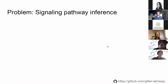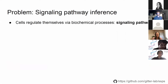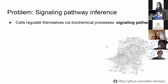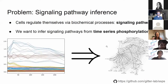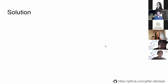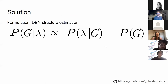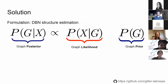We're trying to solve a problem: cells regulate themselves via complicated biochemical processes called signaling pathways. You can think of a signaling pathway as a directed graph where the nodes are proteins and the edges indicate regulatory relationships between them. Our goal is to infer signaling pathways from time series phosphorylation data. We formulate this as a dynamic Bayesian network structure estimation problem — we want a posterior distribution over graph structures G conditioned on the available time series data X.